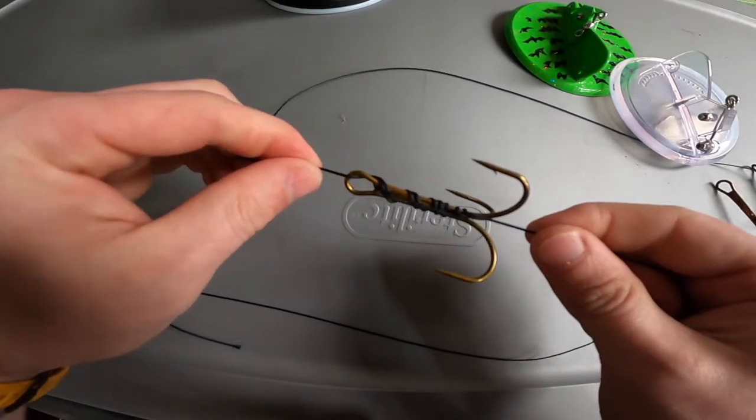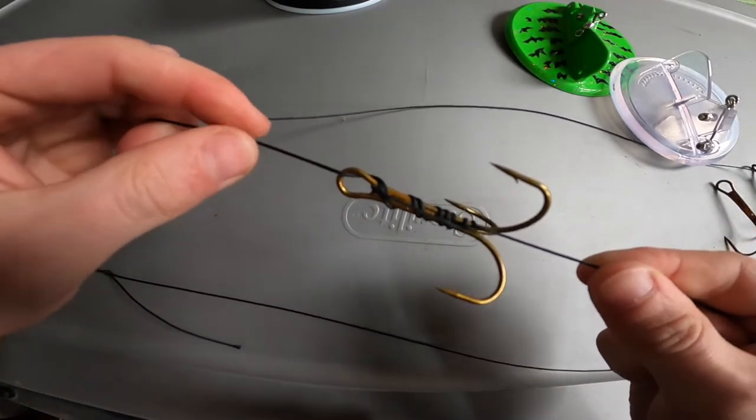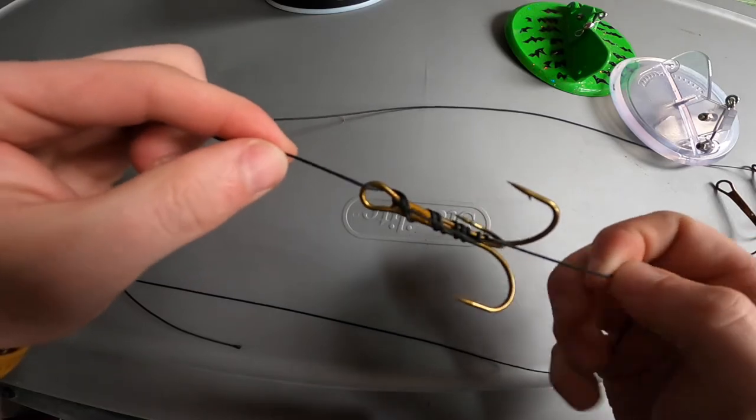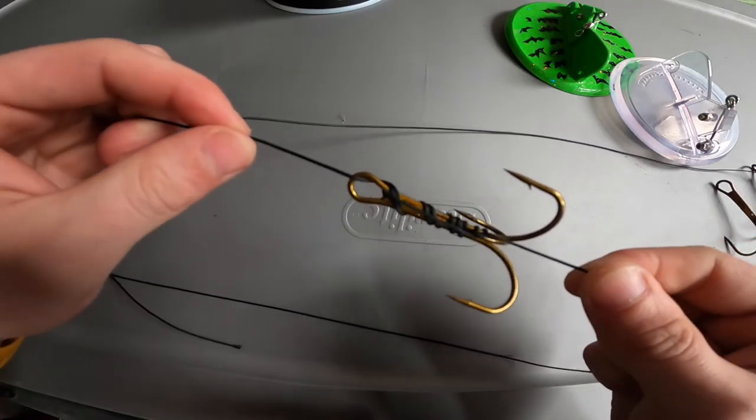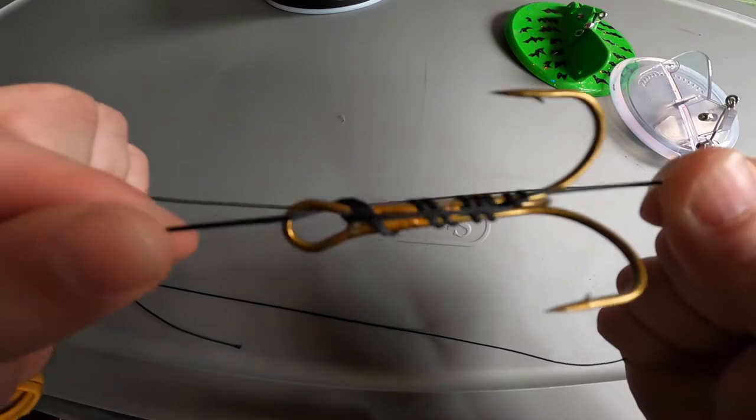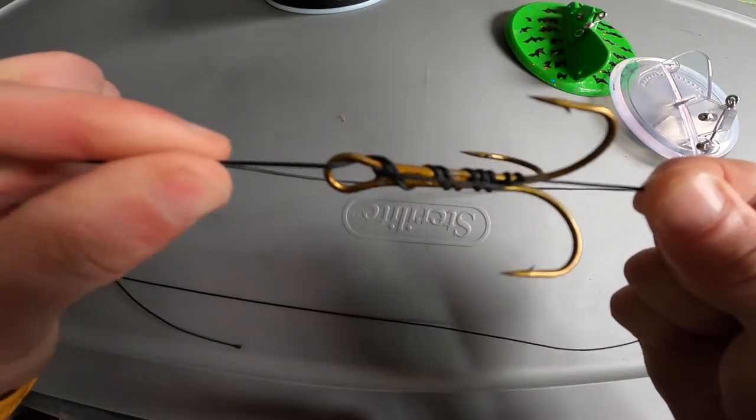Then you would just repeat that for two or three hooks, however many you want, spacing roughly 12 to 18 inches. Some guys go 20 between your hooks. That gives you a really nice secure knot on that hook that's not going to slip, it's not going to come off, and is super strong.